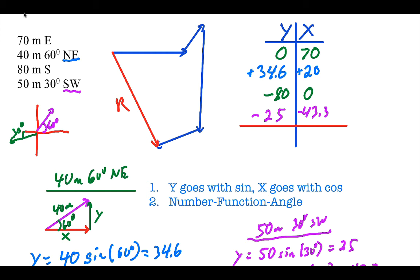First, I'll add both columns down. 34.6 minus 80 minus 25 is negative 70.4. 70 plus 20 minus 43.3 is positive 46.7. Notice what that tells me. A negative y is south, a positive x is east. I already know it's going southeast.